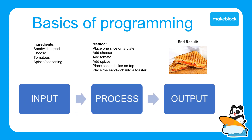Programming is exactly like making a sandwich. The inputs, or the ingredients, are all of your commands. The process, or the method, is the logical sequence on which your program needs to be constructed. The output, or your end result, is what you want your program to achieve. What all of this means is that if your program does not achieve what you want it to achieve, then there is something wrong with either your inputs or your processes. Finding out what this problem is called debugging.